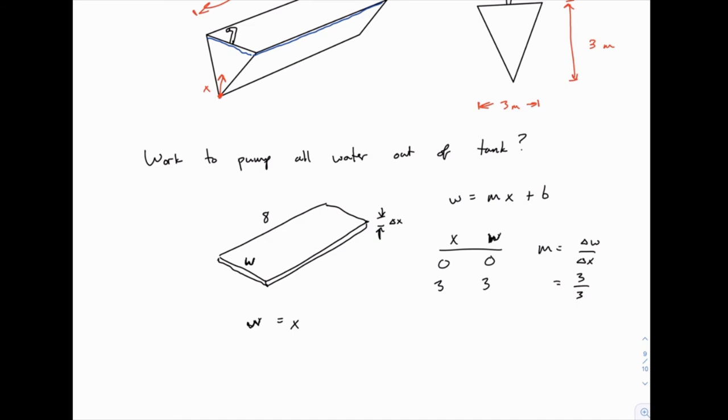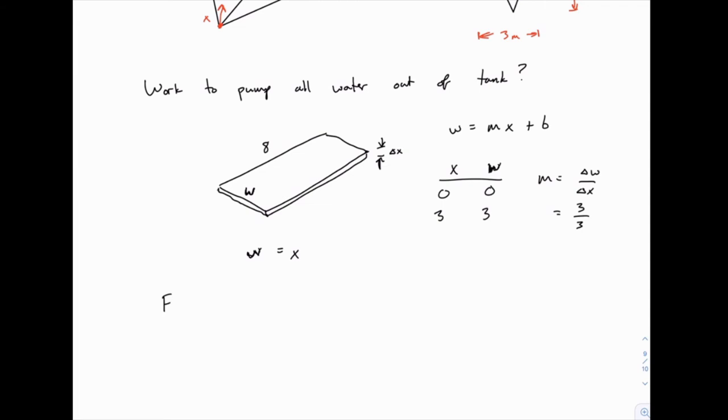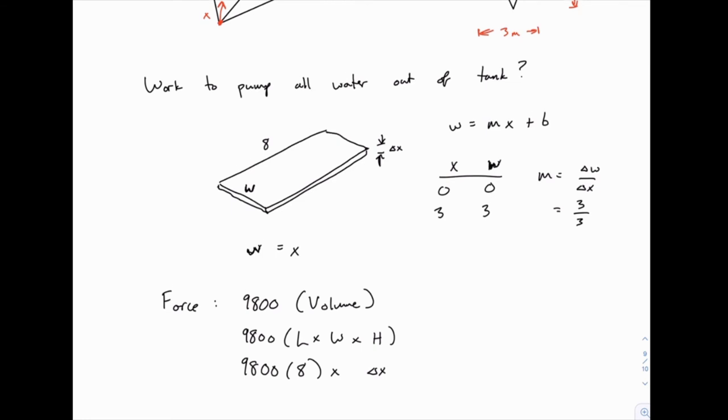So in other words, if we cut a slice one meter above the bottom of the tank, the width would be one meter and so on. So this one's pretty simple. We can move on then to finding the force on one slice. Again, that will be the unit weight, in this case 9800 times the volume. With these rectangular shapes, the volume is length times width times height. The length is a constant 8, the width is just x, and the height delta x. So that's it for force.